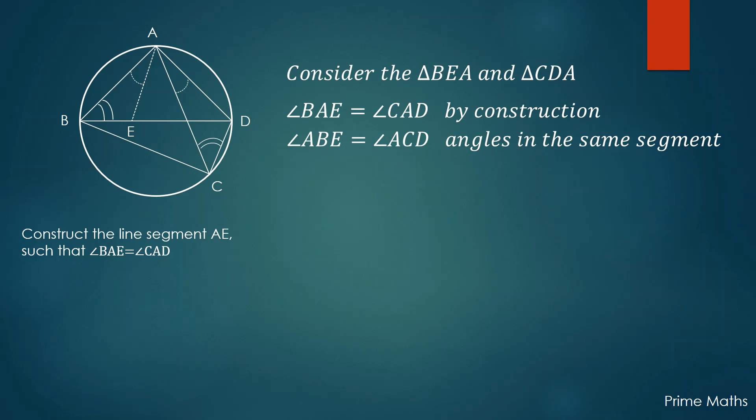So by the angle-angle-angle criteria, the triangles BEA is similar to CDA. Therefore, their sides are proportional, which we write as equation 1. See in this equation, we have been able to obtain a relation between the diagonal AC and the sides AB and CD.